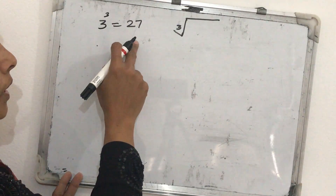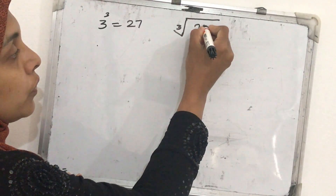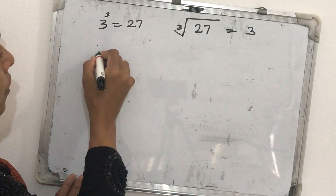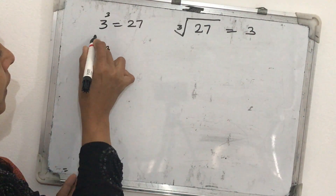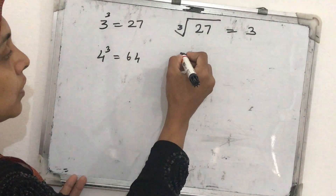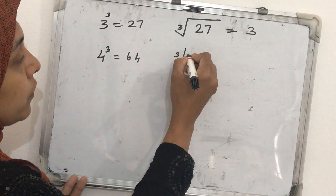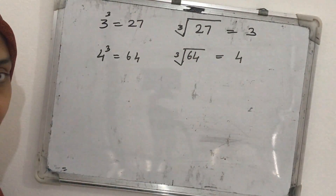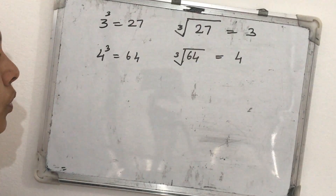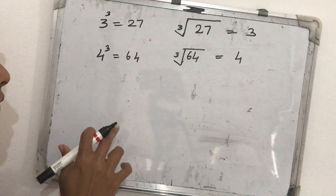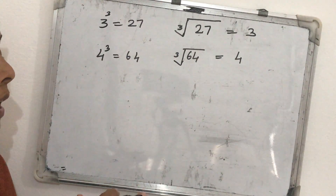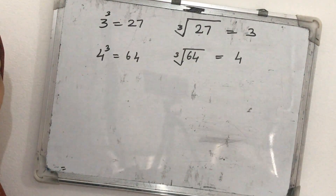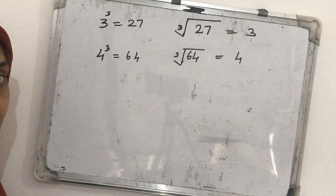So if 3³ = 27, then the cube root of 27 = 3. Similarly, we know 4³ = 64, so the cube root of 64 = 4. Cube root means the opposite of cubing. We can find the cube root of a number by prime factorization, just like square roots.